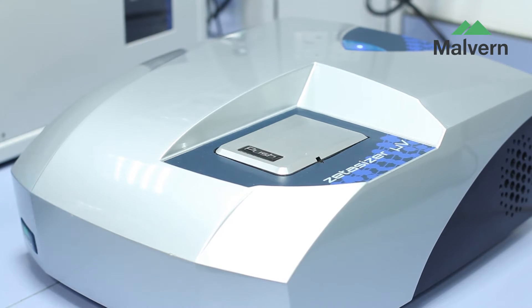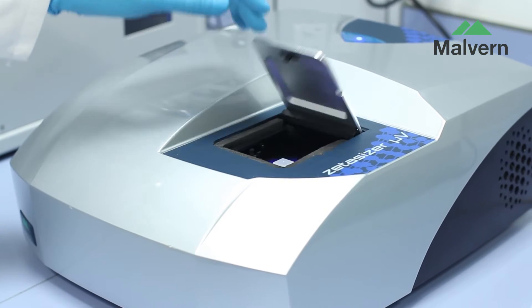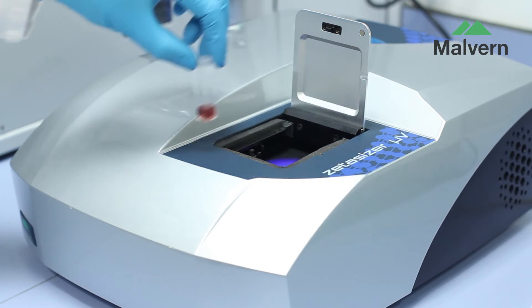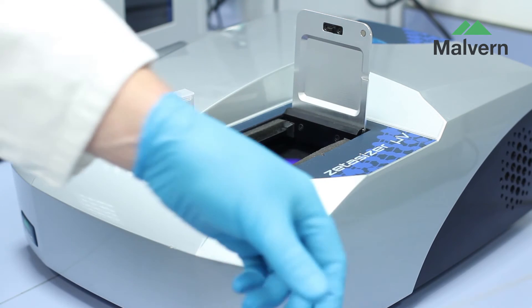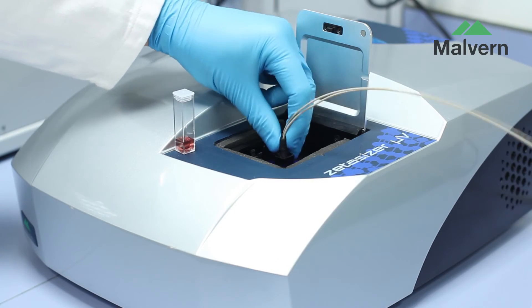Conversion from batch DLS to SEC detector mode could not be simpler or faster. Simply remove the batch cuvette and replace with the low-volume SEC flow cell and close the lid. The system is now ready to run.